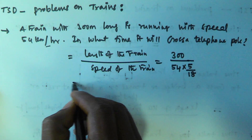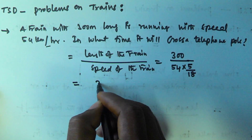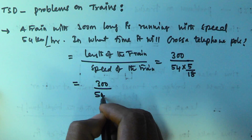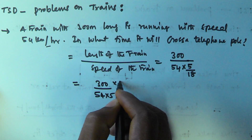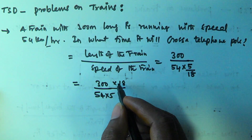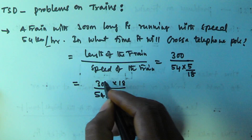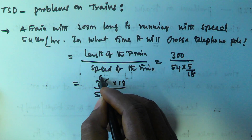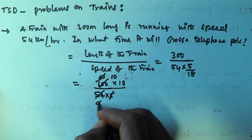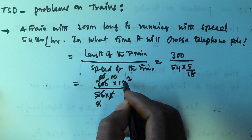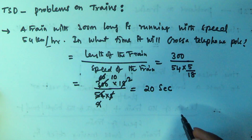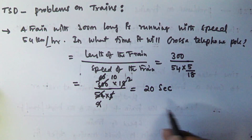So this gives us 300 divided by (54 × 5/18), which simplifies to 20 seconds. So the train takes 20 seconds to cross the telephone pole.